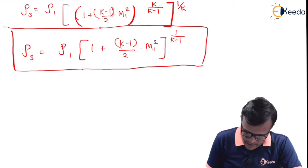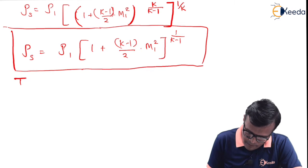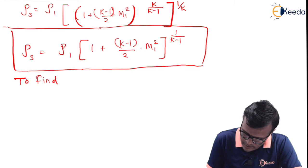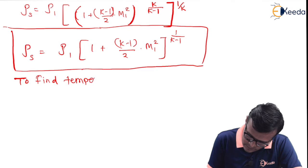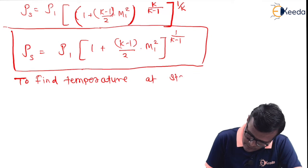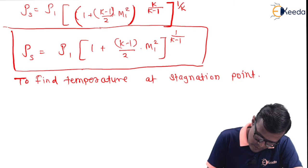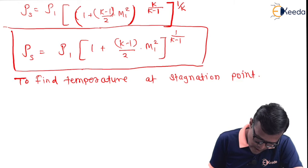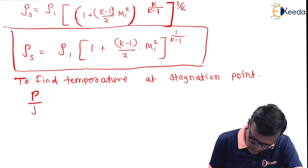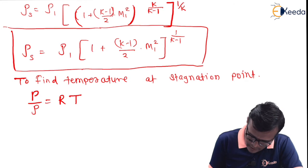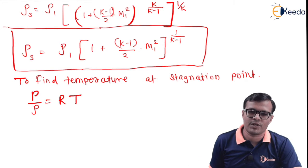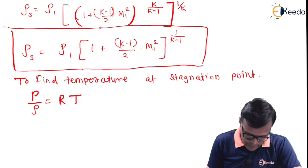Now let us find the temperature at the stagnation point. We have p upon rho is equal to RT. We are going to use this equation because it contains the term temperature.